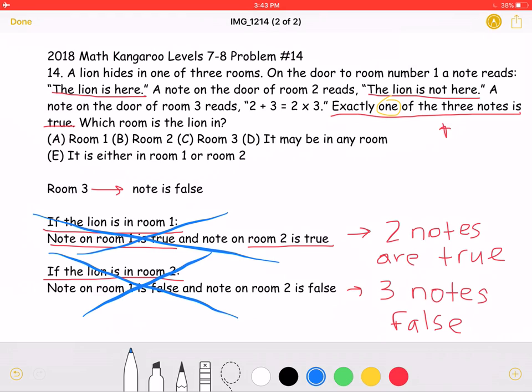Which means that the lion must be in room 3, which is answer choice C.